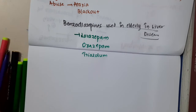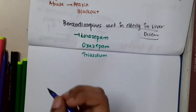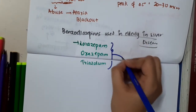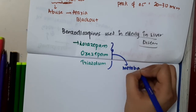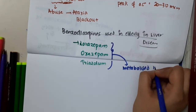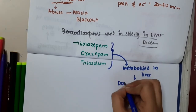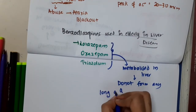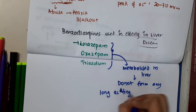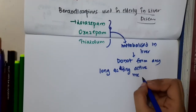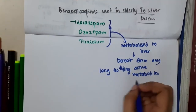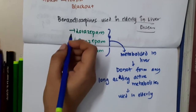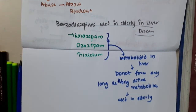Lorazepam, oxazepam, and triazolam are all metabolized in the liver. However, they do not form any long-acting active metabolites. Because they do not produce long-acting active metabolites, they can safely be used in elderly patients.